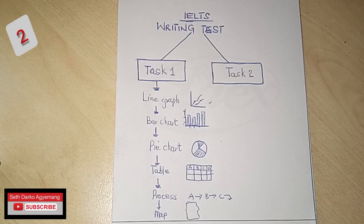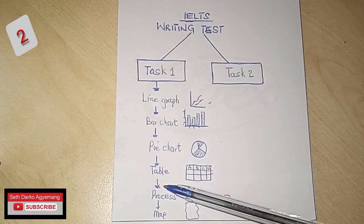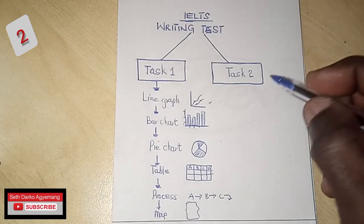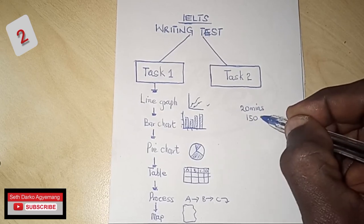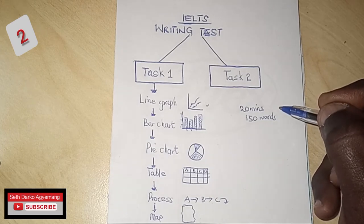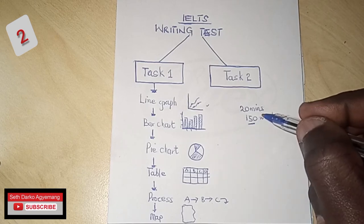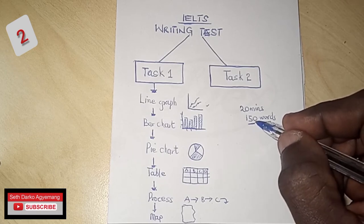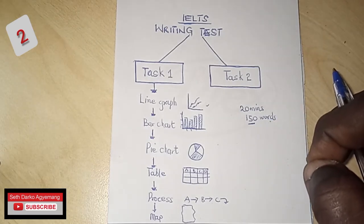Welcome back to my IELTS class. In my previous video I talked about Task 1, where I outlined the various charts you'll be asked to describe. Today I'm going to show you the format for writing Task 1. Remember, you only have 20 minutes to write Task 1, and you are to write 150 words or more. You shouldn't write less than 150 words — that's a total fail. It requires practice, and I'll show you how to know if you've written the right amount.